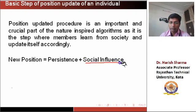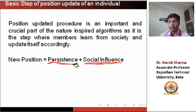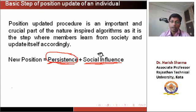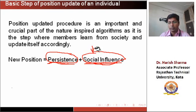This graph shows the distribution of individuals in the search space, and the individuals move towards the global optimal by using a step size. The step size is decided from the social influence, and this social influence is added to the individual's current position. This decides how large the step size will be, giving the new position of the individuals.